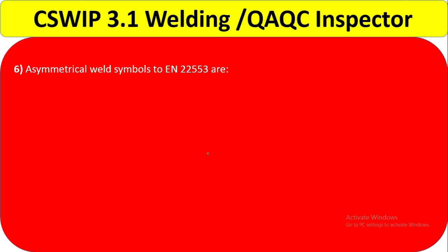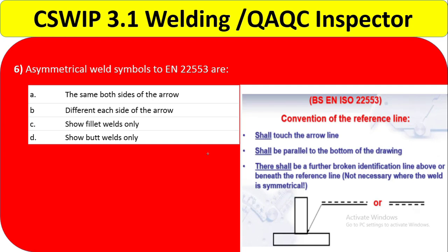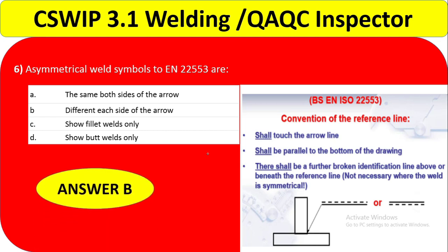Question number 6: asymmetrical weld symbols to EN 22553 are — the same both sides of the arrow, different each side of the arrow, show fillet welds only, or show barred welds only? It is not only for fillet welds or barred welds — all types of joints can be shown. The same both sides is definitely not correct. The reference line convention shows the two sides should be different. Option B — different each side of the arrow — is the correct answer.